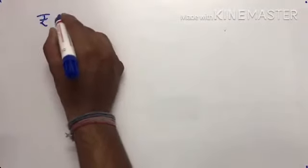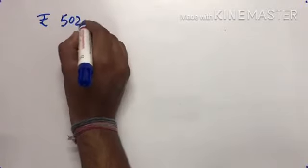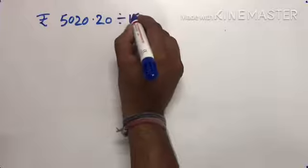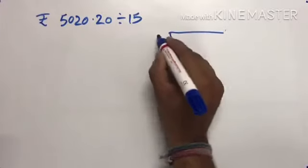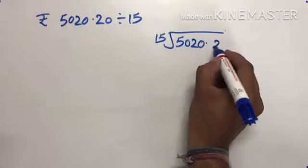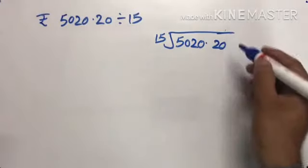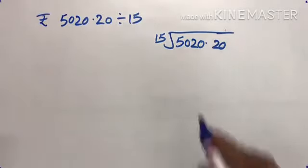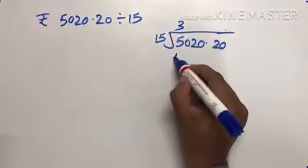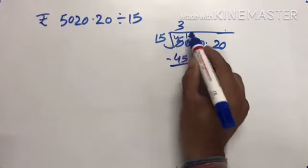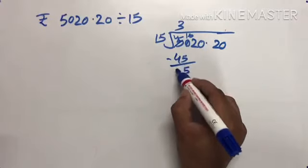Now, rupees 5,020.20, we have to divide it by 15. 15 times 1 is 15, 15 times 2 is 30, 15 times 3 is 45. 50 divided by 15: 15 times 3 is 45. 50 minus 45 is 5, 10 minus 5 is 5, 4 minus 4 is 0.